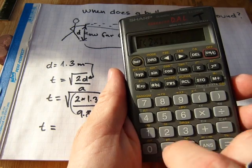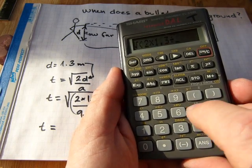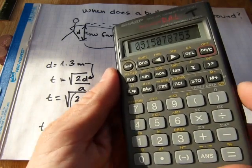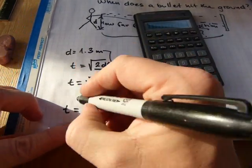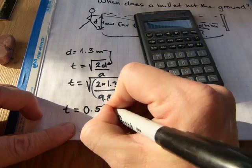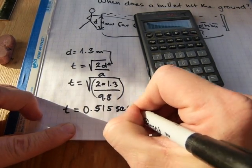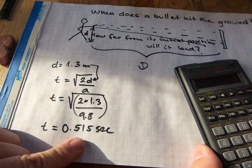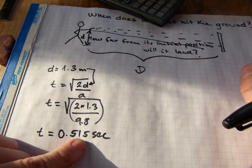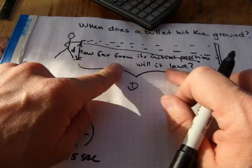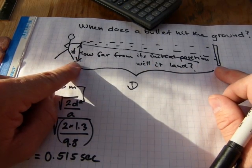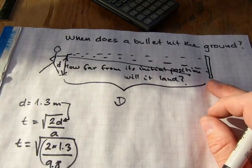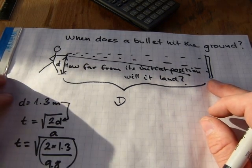Equals 0.515 seconds. Now in the 0.515 seconds, how far will the projectile travel? Well, it depends how fast it is traveling in the first place.